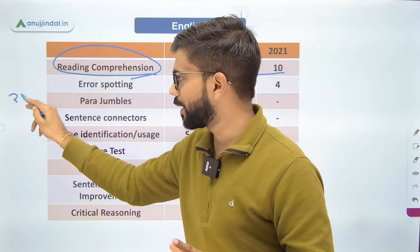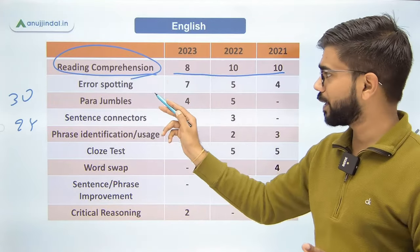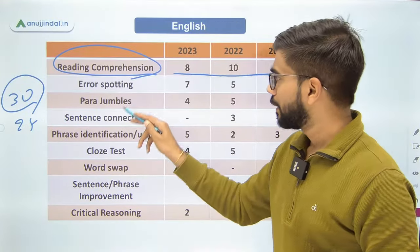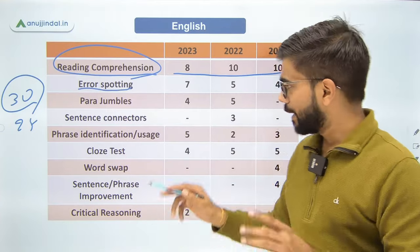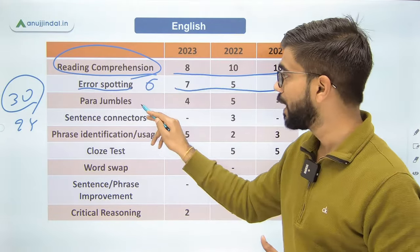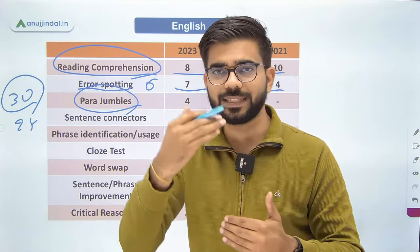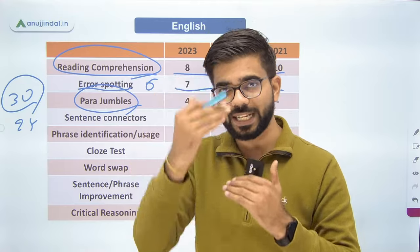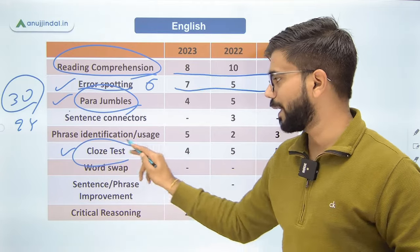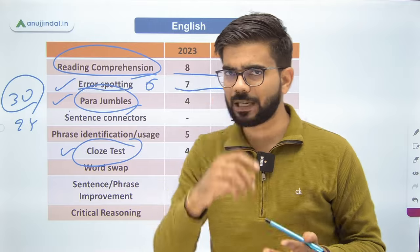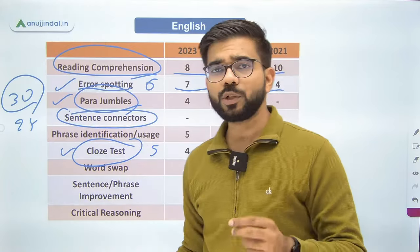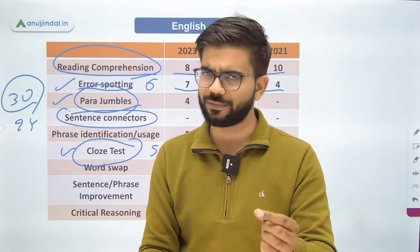In English there are 30 questions and you get 25 minutes. Out of 30, around 10 questions are from reading comprehension only. Then error spotting is a major category — on average 5-6 questions. Parajumbles, where you have to re-arrange random sentences into a logical sequence — very important. Then cloze test — a paragraph is given with blanks which you have to fill. Generally around 5 questions come from here. Sentence connectors — you are given two sentences and have to connect them with the right word.